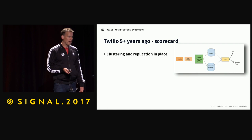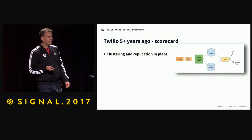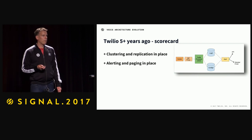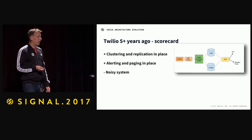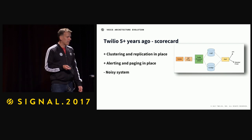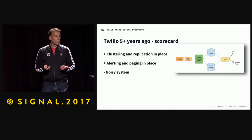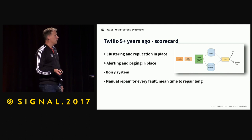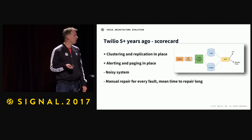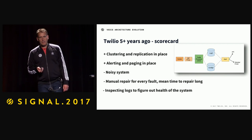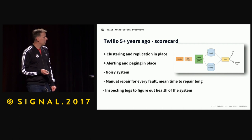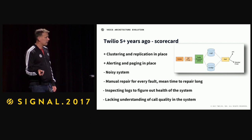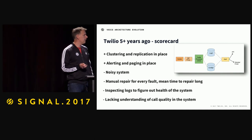On the plus side, we had clustering and replication in place, which meant we could survive single node failures. We had alerting and paging in place. But we had a very noisy system — false negatives not sorted from real negatives. For every fault we had, we did a manual repair, and mean time to repair was often way too long. In order to figure out the health of the system, we often had to dig into the logs. And we didn't have a very good understanding of call quality in the system.